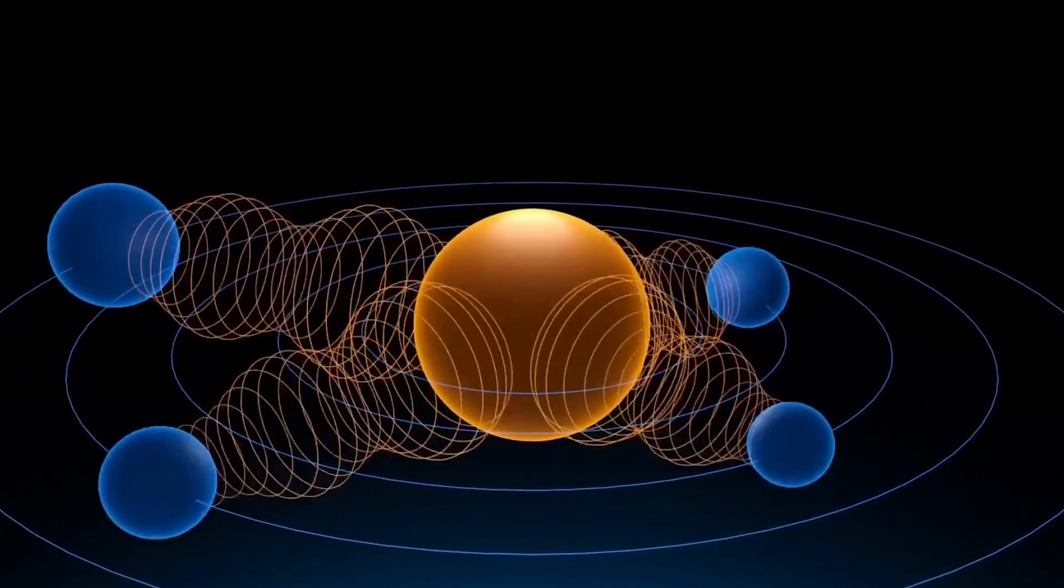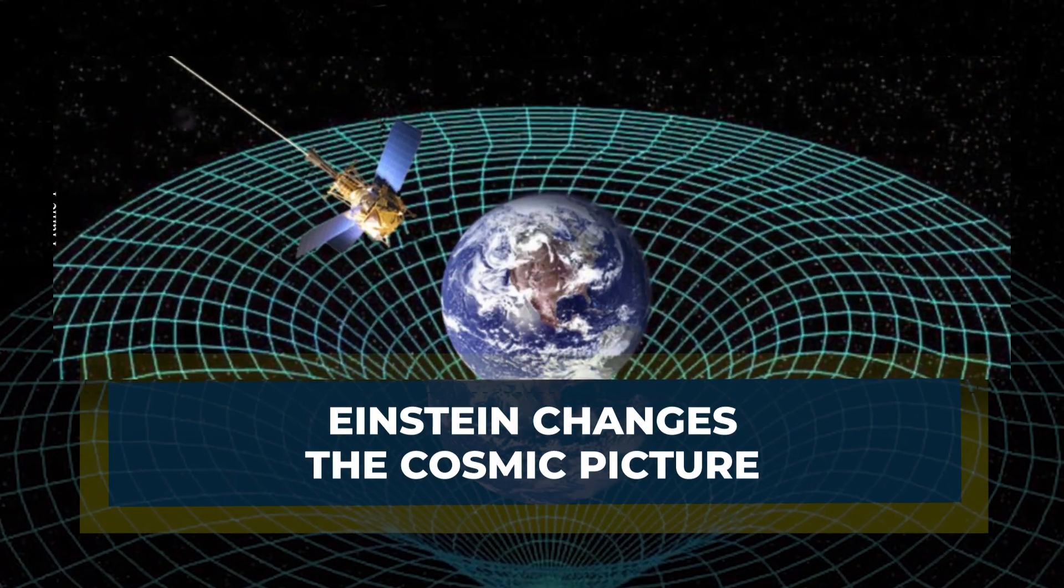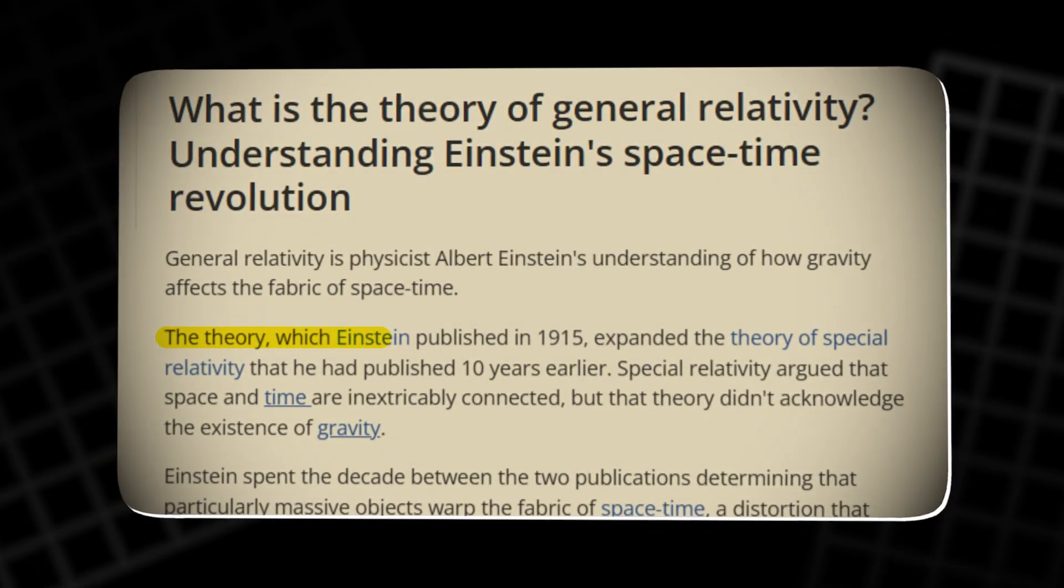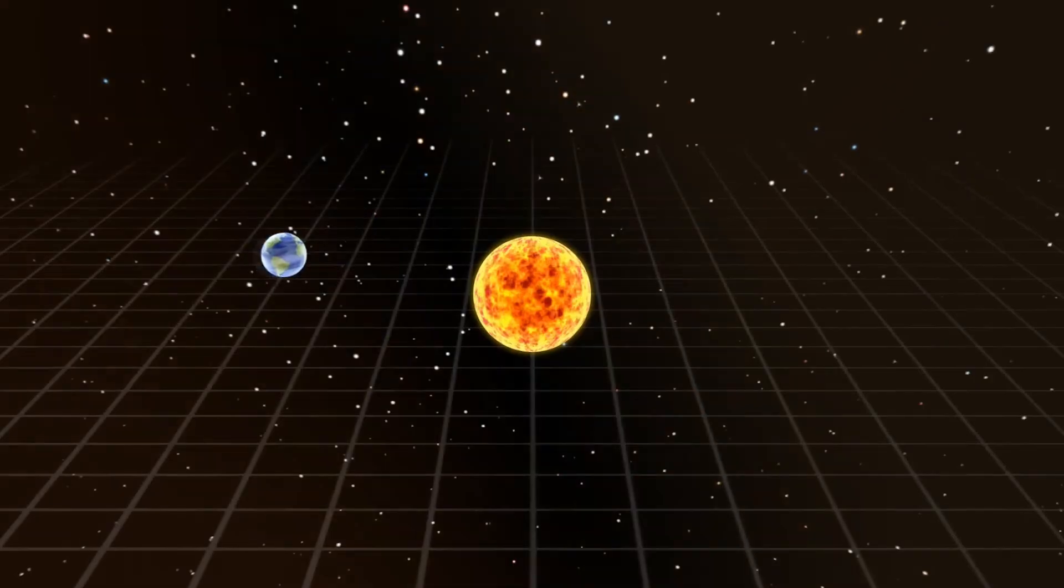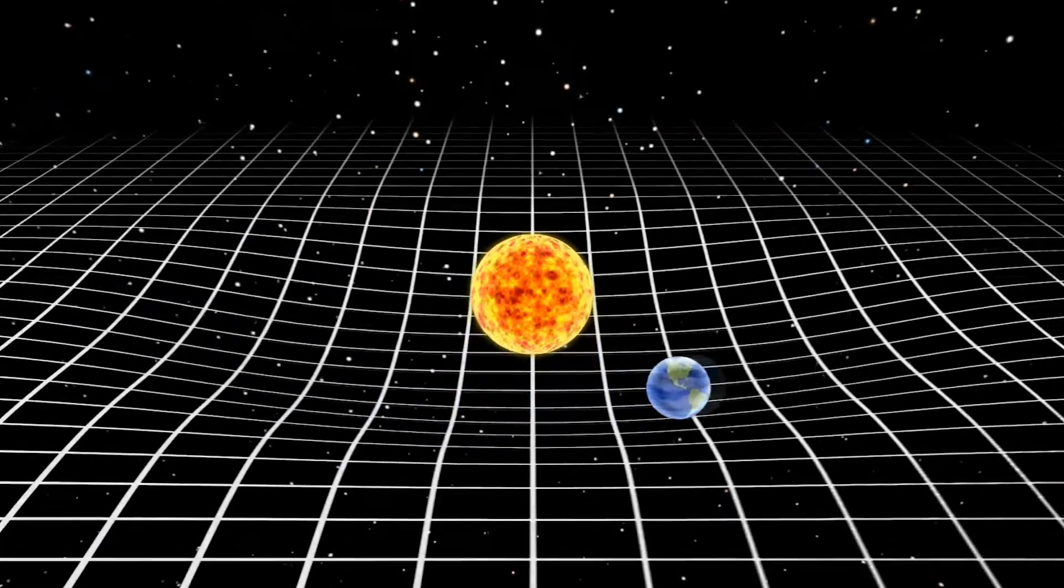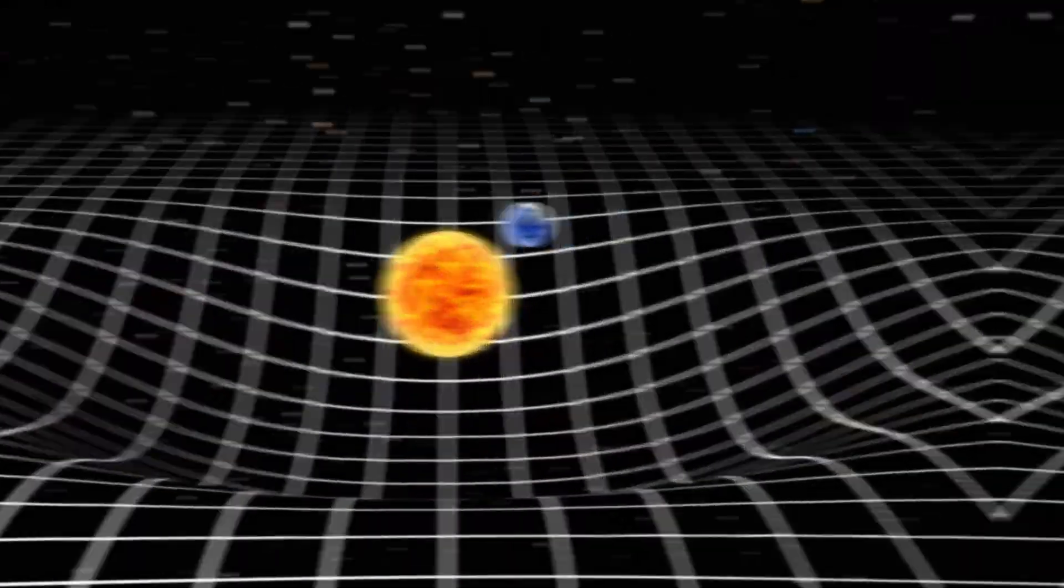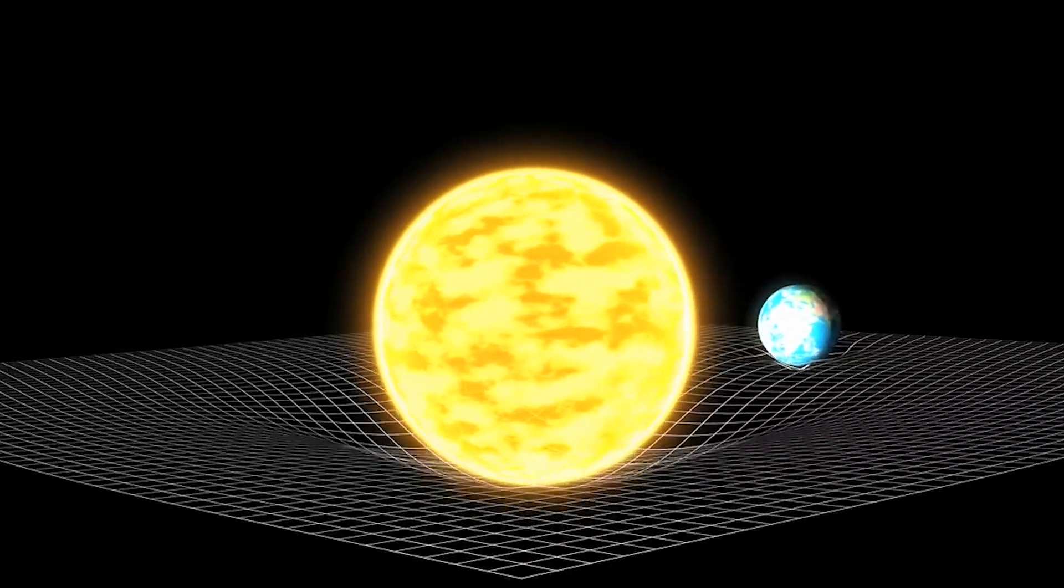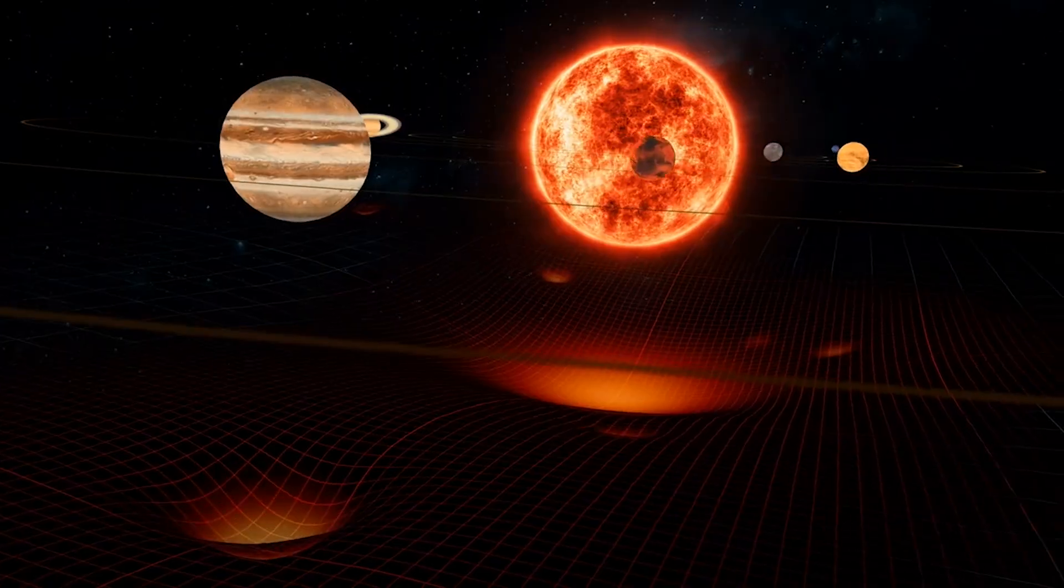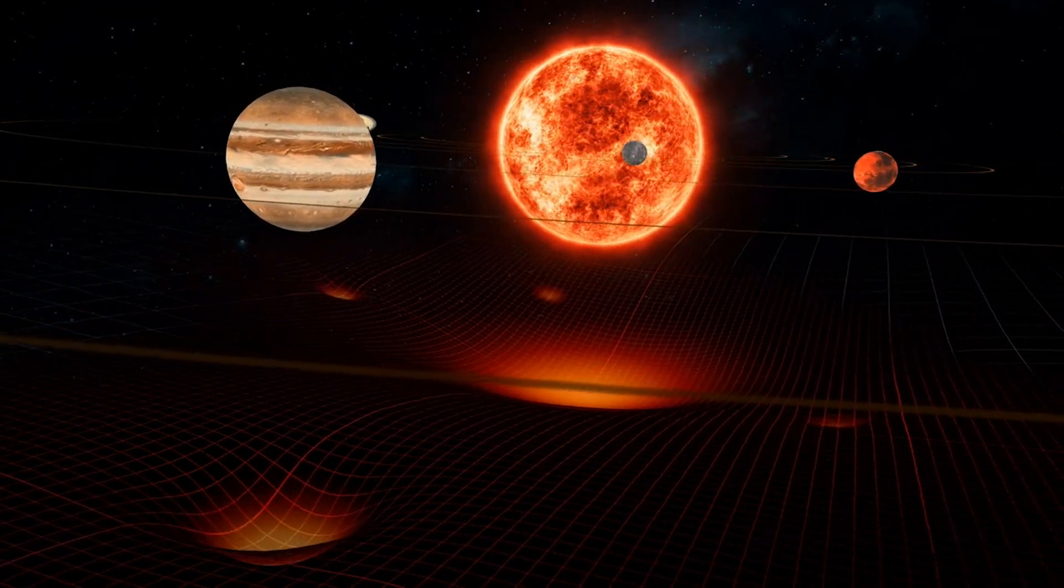Einstein changes the cosmic picture. In 1915, Albert Einstein released his theory of general relativity. Space and time fused into one structure called spacetime. Gravity was no longer a pulling force. It became the bending of this fabric. Heavy objects curved space, and planets simply followed those curves.